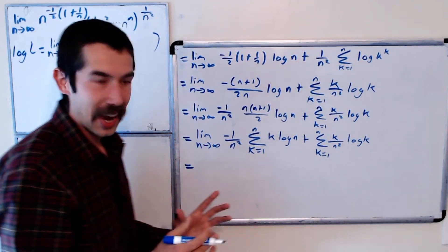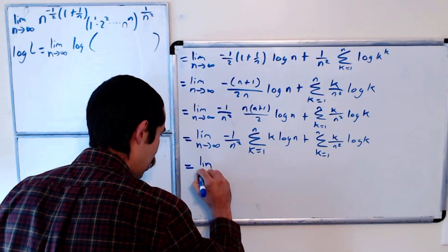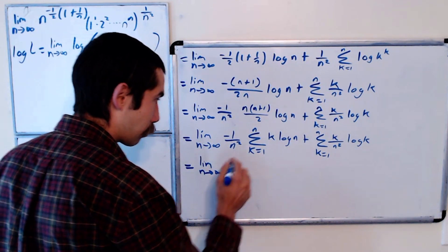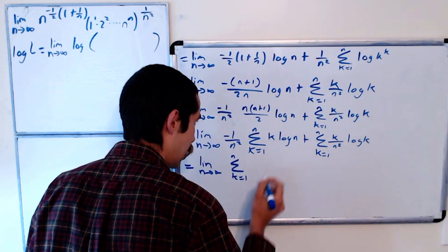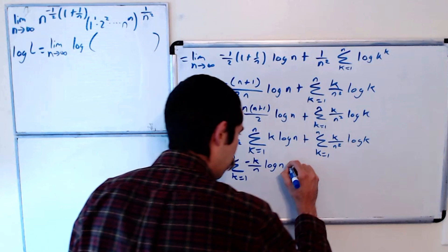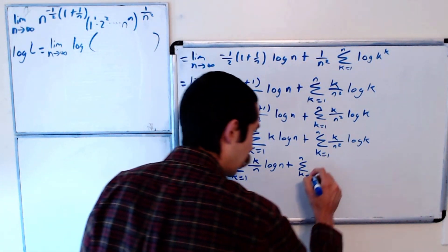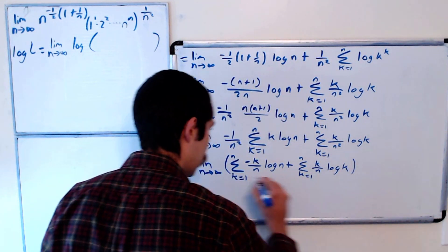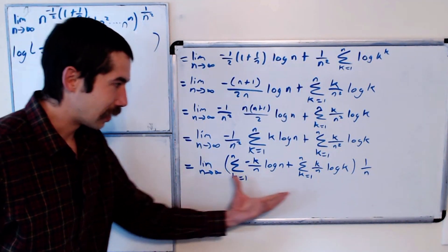Right, we're going to need that delta x term—1 over n could be delta x. So let's have a limit as n goes to infinity. Let's factor out a 1 over n. So what are we going to have? We're going to have the sum from k equals 1 to n of negative k over n log n, plus the sum from k equals 1 to n of k over n log k, all of this times 1 over n.